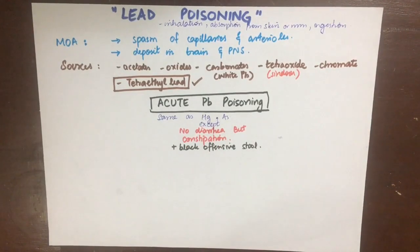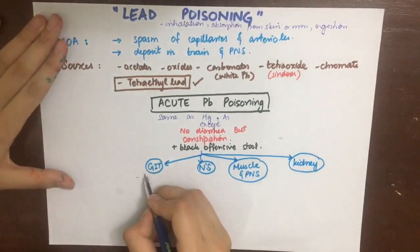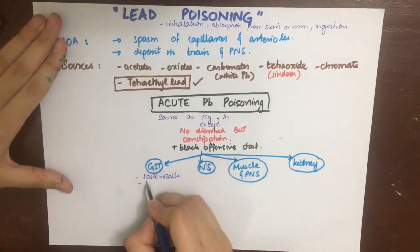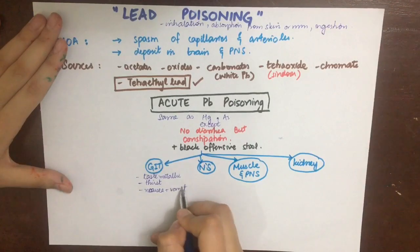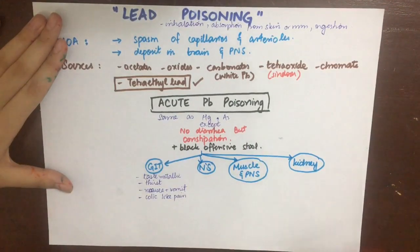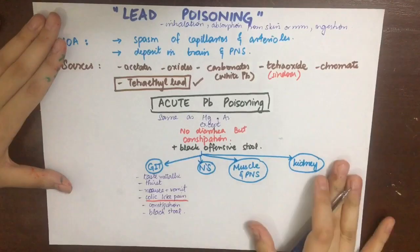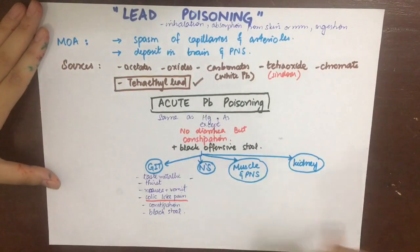We will divide the symptoms system-wise into the GIT, the nervous system, muscle and peripheral nervous system, and the kidney. The GIT symptoms include metallic astringent taste in the mouth, dry throat, thirst, nausea and vomiting, colic-like pain in the abdomen which can be relieved by pressure, constipation, and black stool.